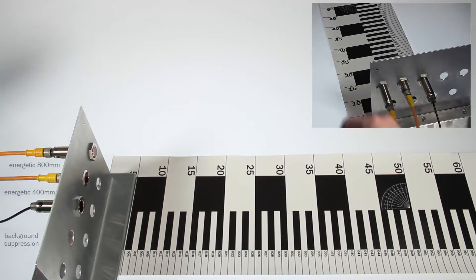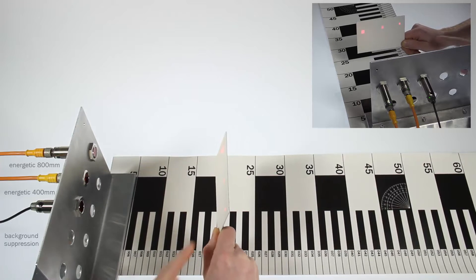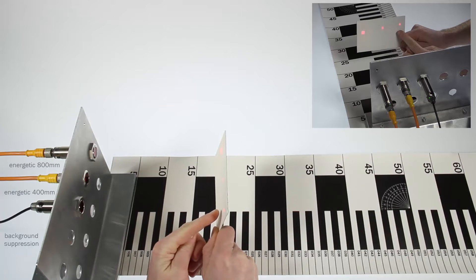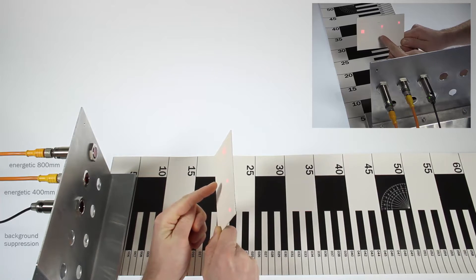The GRTB18 with background suppression and two different energetic versions GRTE18. The GRTB18, the sensor with background suppression, has a very small and round shaped light spot using the SICK Pinpoint technology. The GRTE18 energetic 400mm version is also based on the Pinpoint technology with a small light spot diameter.